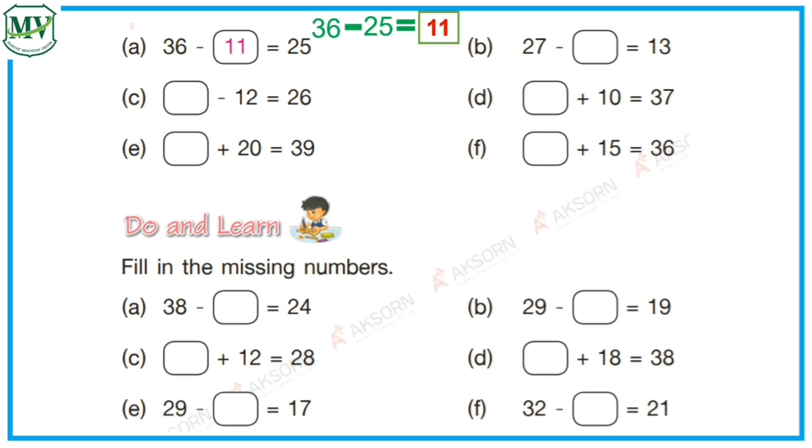Letter C. Blank minus 12 equals 26. Now, add 12 to 26. So, 26 plus 12 equals? That's right! It's 38. The missing number is 38.